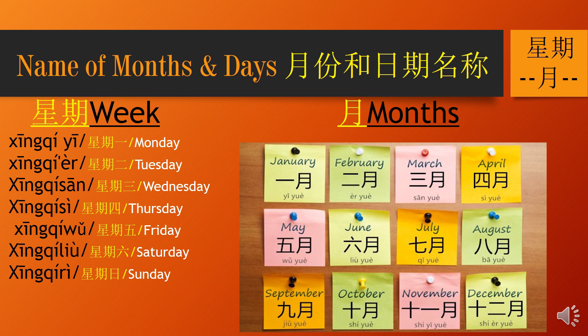月 — January. 月, 月 — February. 十一月, 月 — March. 四月, 四月 — April. 五月, 五月 — May. 六月, 六月 — June. 七月, 七月 — July. 八月, 八月 — August.